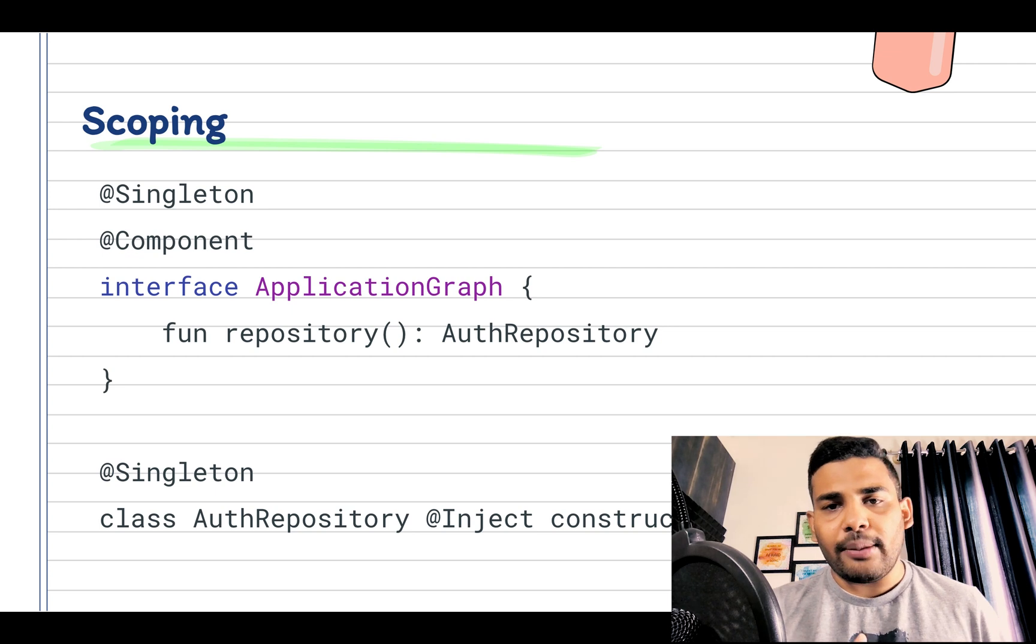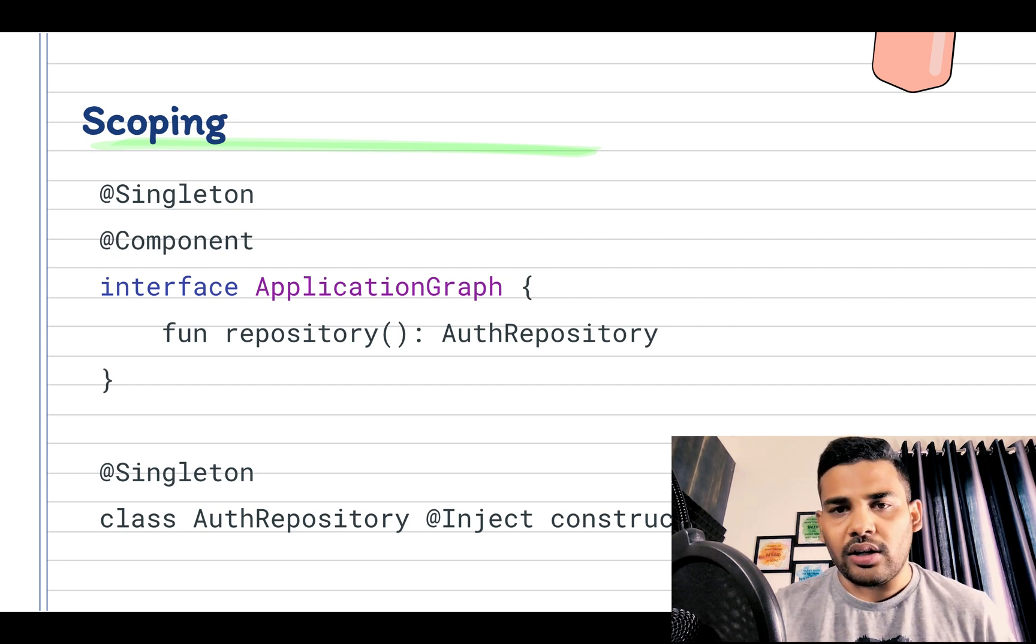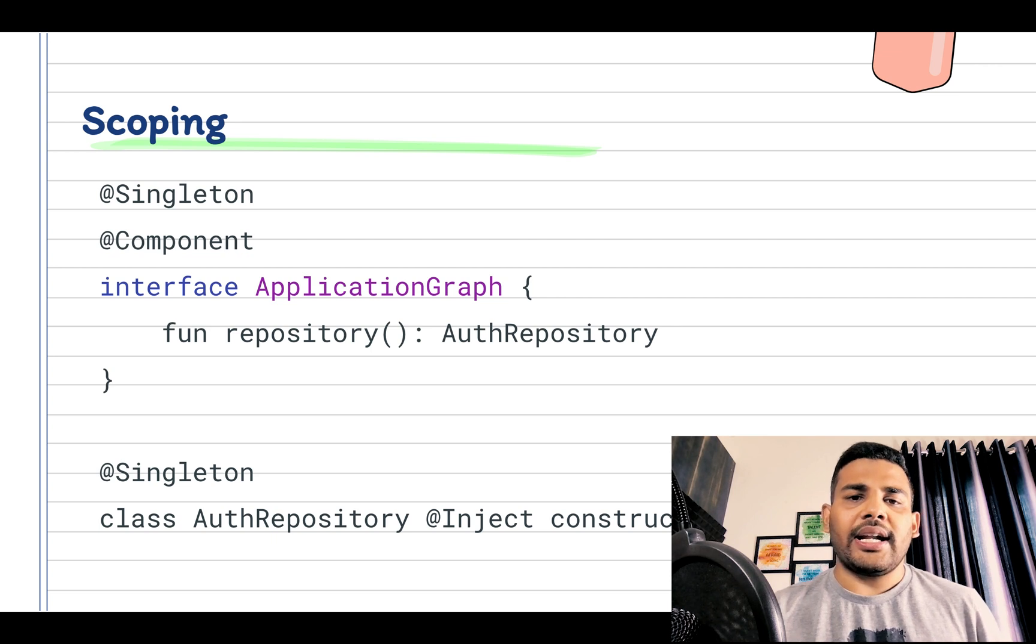Sometimes we need to create dependency that is required for a specific flow. For example, we created the AuthViewModel for the authentication flow in the last video. We can achieve this thing by creating our own custom scopes for a specific flow, and we will learn all these things in coming videos.